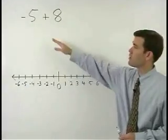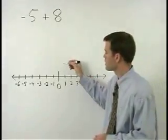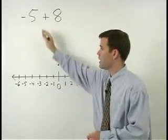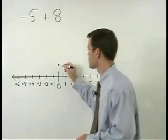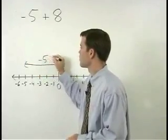So when you're simplifying a problem like negative five plus eight, we start at zero and negative five moves us five units to the left along our number line.